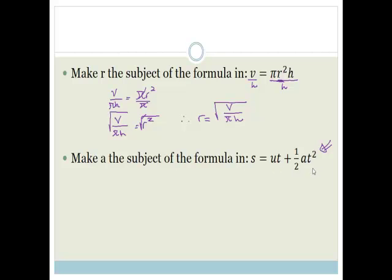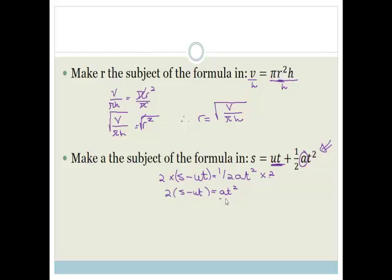This last one says make A the subject of the formula. We've got S is equal to UT plus a half A T squared. We need to isolate just that A. So, get rid of the UT first: S minus UT is equal to a half A T squared. To get rid of the half, we times by 2 on both sides, so 2 times S minus UT is equal to A T squared. To get A by itself, we divide both sides by T squared. Finally, A is equal to 2 times S minus UT, all over T squared.